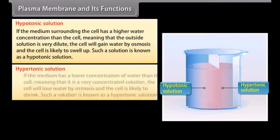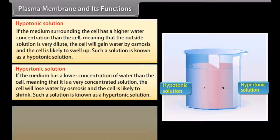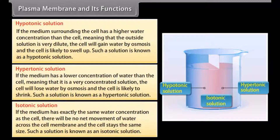If the medium has a lower concentration of water than the cell — meaning it is a very concentrated solution — the cell will lose water by osmosis and is likely to shrink. Such a solution is known as a hypertonic solution. If the medium has exactly the same water concentration as the cell, there will be no net movement of water across the cell membrane and the cell stays the same size. Such a solution is known as an isotonic solution.